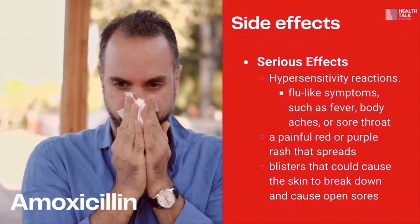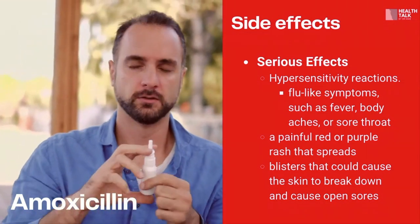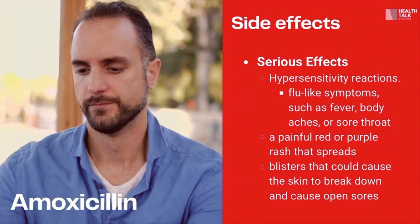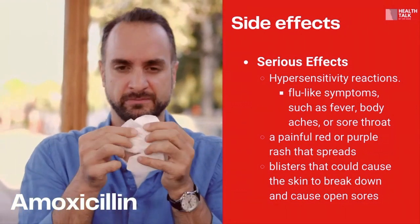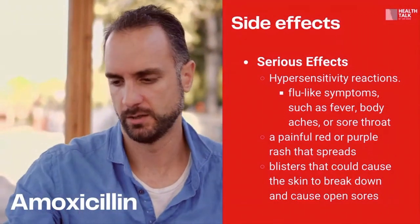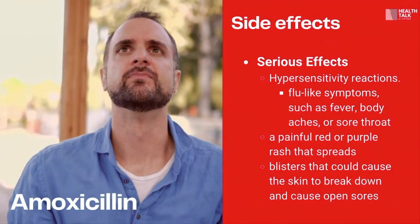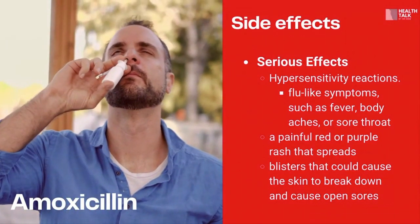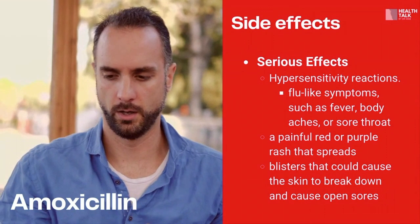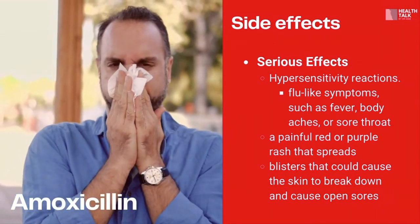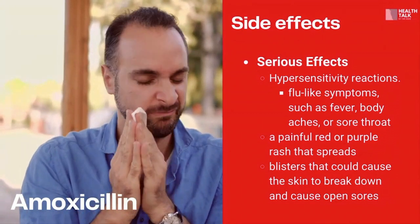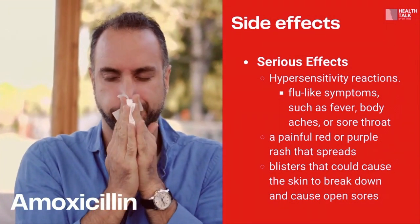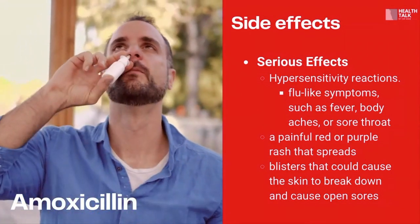Now we go to the serious side effects of amoxicillin. Some patients may have a hypersensitivity reaction characterized by flu-like symptoms such as elevated body temperature, body pain, sore throat, a painful red or purple rash that spreads, and blisters that could cause the skin to break down and form open sores. Be very careful if you are taking amoxicillin. Doctors typically prescribe it within seven days, sometimes extending to 10 to 14 days depending on the infection.